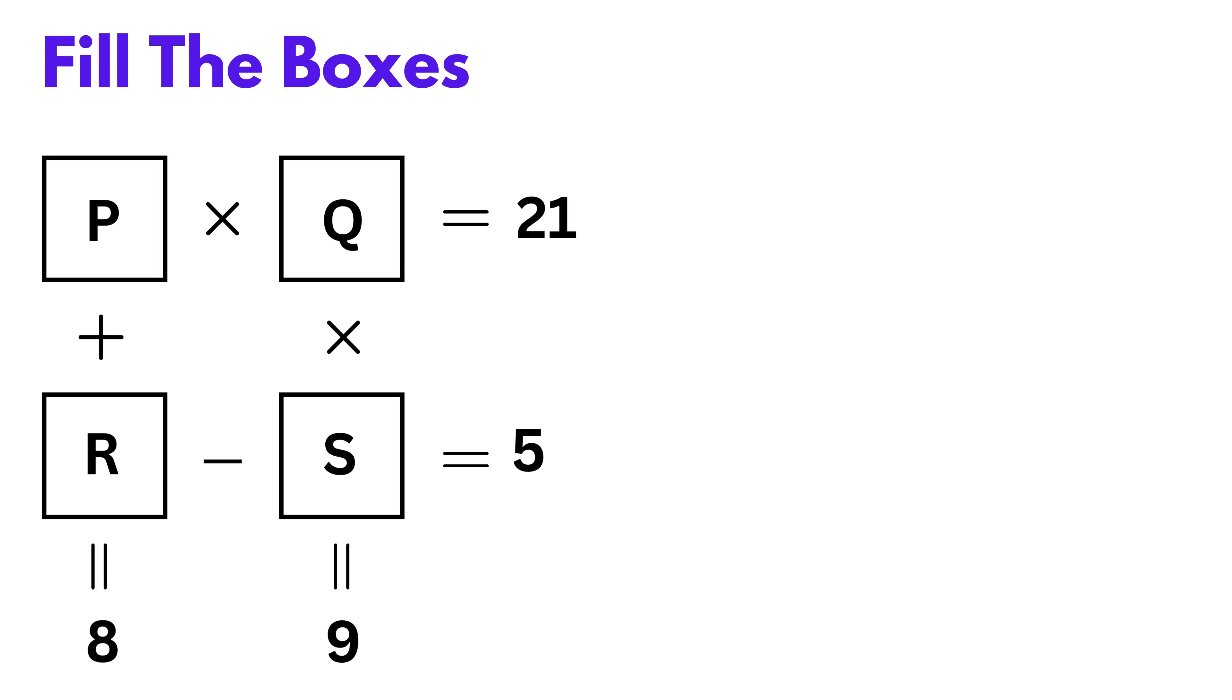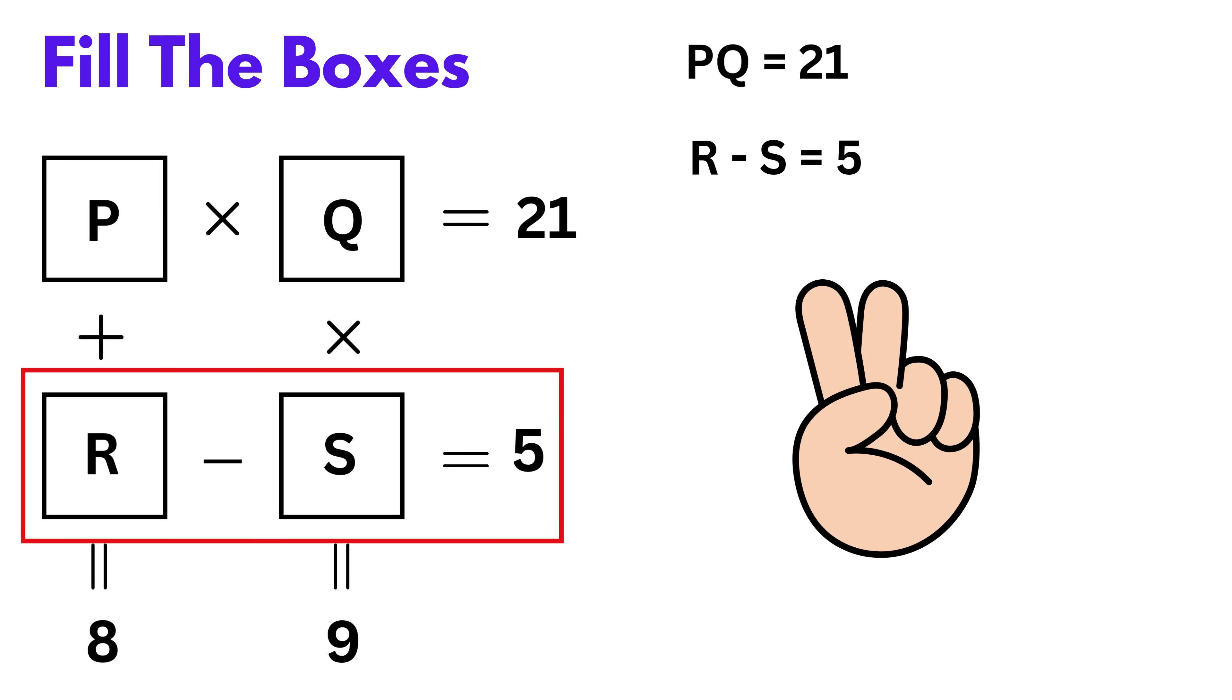Now what to do? Let's try to make some equations using these boxes. Maybe start by looking at rows and columns and see what operations we can use. Look at this first row. We are told that P times Q is 21. Now look at the second row. We are told that R minus S is 5. Great! That gives us two equations already.